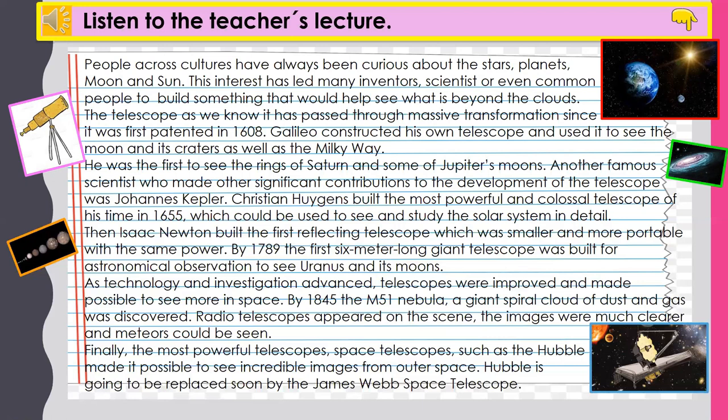Christian Huygens built the most powerful and colossal telescope of his time in 1655, which could be used to see and study the solar system in detail. Then Isaac Newton built the first reflecting telescope, which was smaller and more portable, with the same power. By 1789, the first six-meter-long giant telescope was built for astronomical observation to see Uranus and its moons. As technology and investigation advanced, telescopes were improved and made it possible to see more in space.